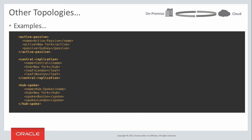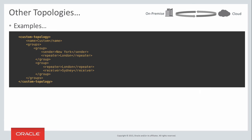For other topologies, in your operational config you can simply specify central replication or hub and spoke. If none of these suit your needs, you can specify a custom topology. As our previous diagram showed, this is how we specify a custom topology — with New York as the sender, London as the repeater, and Sydney as the receiver. That's all you need to know about topologies.